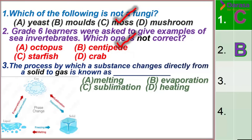Continuing the song: evaporation — liquids to gases; melting — solid to liquid; freezing — liquid to solids. Matter can change from state to state. Therefore, the correct answer for the process of changing directly from solid to gas is sublimation.